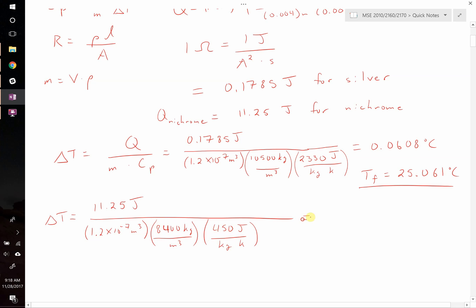Punching all that in, we find that the change in temperature for nichrome is 24.8 degrees. So, our temperature final is going to be equal to 25 plus 24.8 is equal to 49.8 degrees Celsius.